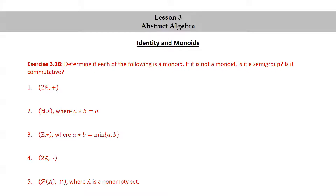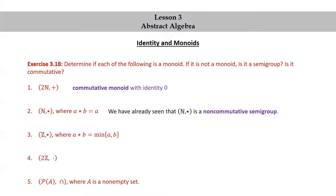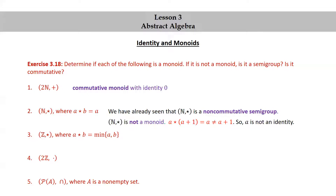The first one, 2N, the set of even natural numbers together with addition, is a commutative monoid with identity 0. The second one, N★ where A★B = A, we have already seen that N★ is a non-commutative semigroup. N★ is not a monoid. If we take any A, then A★(A+1) = A, which is not equal to A+1, so A is not an identity. Many students find this argument a bit confusing until they look over it very carefully.